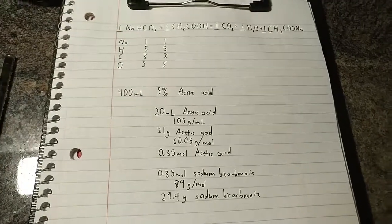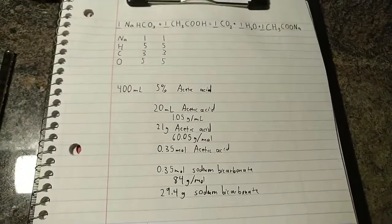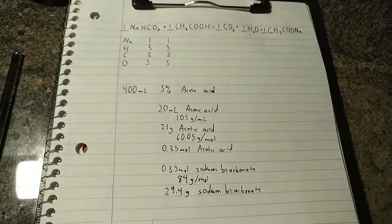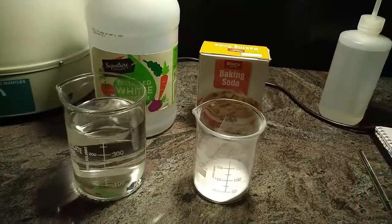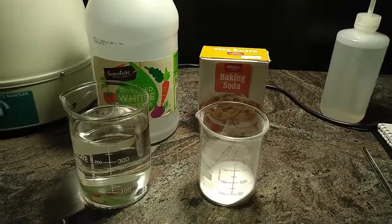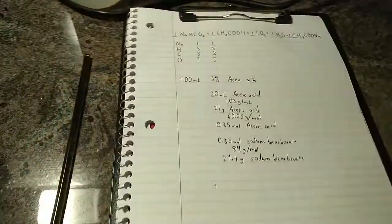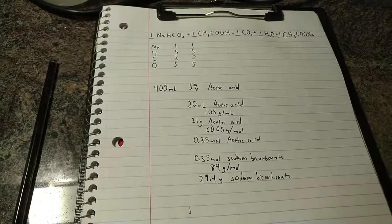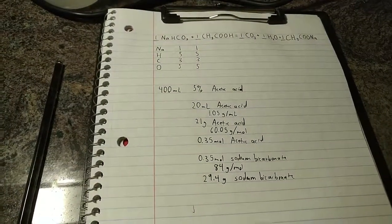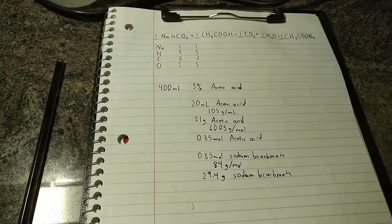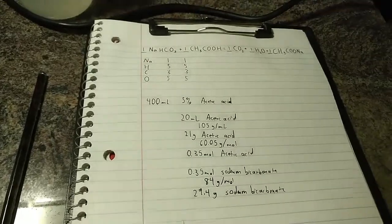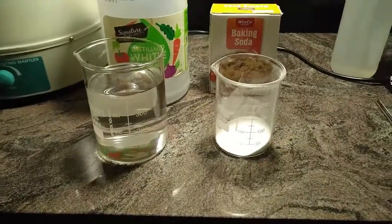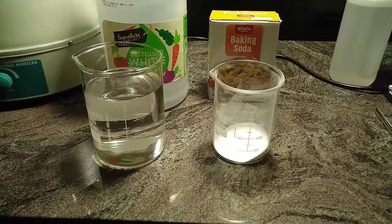So the first thing I'll be trying is making sodium acetate from acetic acid and sodium bicarbonate. You might recognize those as being regular vinegar and baking soda. So I've already done the stoichiometry and found that for the 5% acetic acid I have, I need 400 milliliters, and that will react with 29.4 grams of sodium bicarbonate. So I've already weighed out and measured out the two reactants.